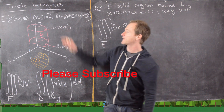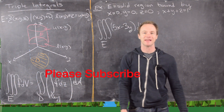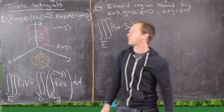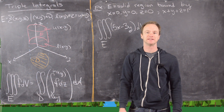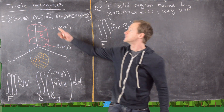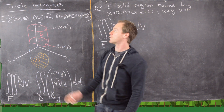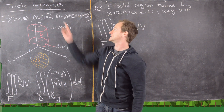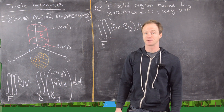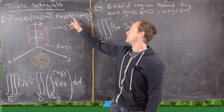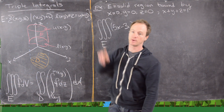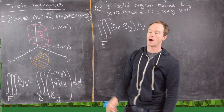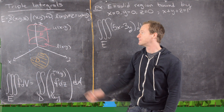So let's say we've got this region E, and it's defined in the following way. It's made up of points x, y, and z — so it's a solid region — where x and y come from some subset D of the x, y plane, and then z is bound between this lower function L(x, y) and this upper function U(x, y).